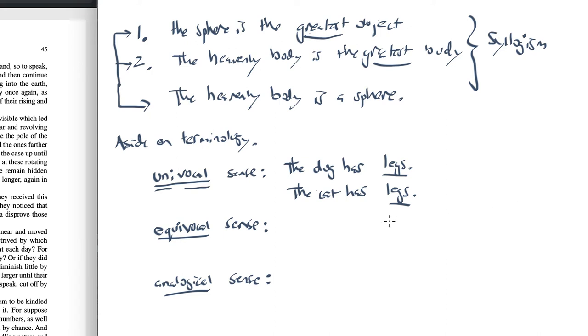What about the equivocal sense? Well, let's suppose you say the bat flew up the chimney. And let's also say that I swung the bat at the baseball. When I'm using the term bat in the first sentence and when I'm using the term bat in the second sentence, I mean something completely different by the term bat. So there is an equivocal sense here. That is that I'm using the same word, an equivalent word, but I mean something completely different by bat in the first sentence and in the second sentence. That is the equivocal sense of those two words.